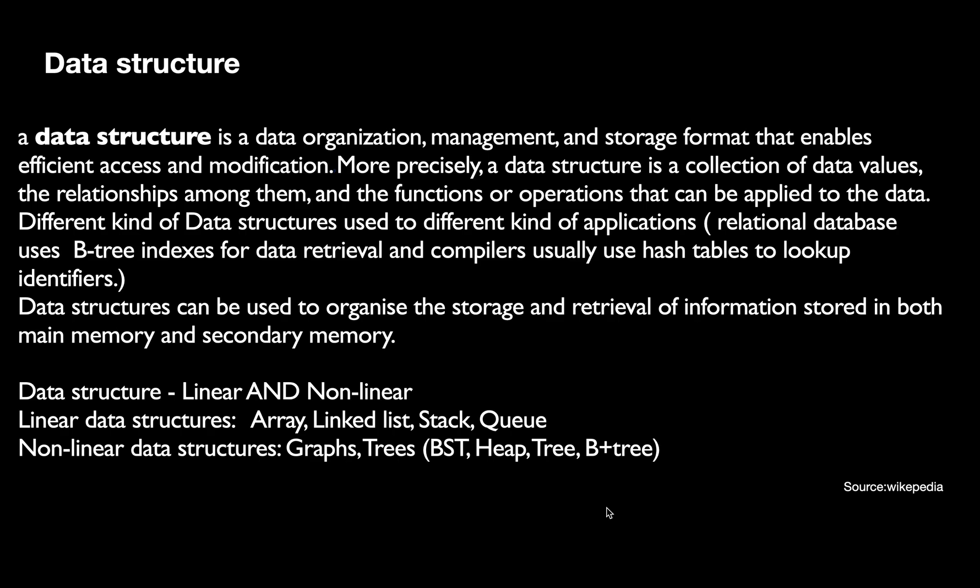Different kinds of data structures are used for different kinds of applications. For example, relational databases use B-tree indexes for data retrieval, and compilers usually use hash tables to look up identifiers. B-trees and hash tables are different sets of data structures. You can also be asked: relational databases use B-tree indexes and compilers use hash tables to look up identifiers.